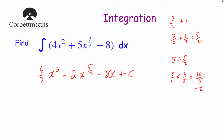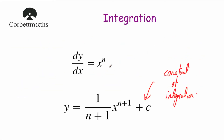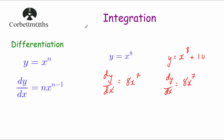This video has been on integration. We looked at how to integrate by increasing the power of x by 1 and dividing by the new power. We looked at why it's important to add the constant of integration, the plus c. Integration is the reverse process of differentiation — very useful if we know the gradient function and want to find y, the equation of the curve. It can also be used to find the area under the curve, which we'll look at in another video. I hope you found this video useful. Thanks very much. Bye.